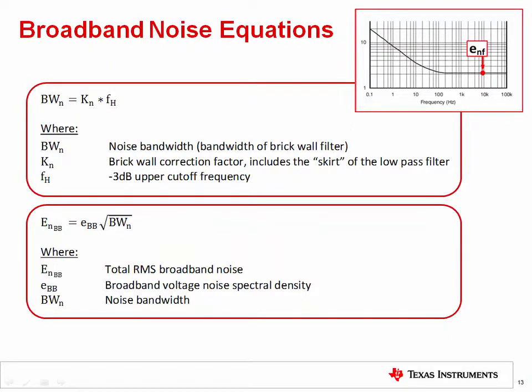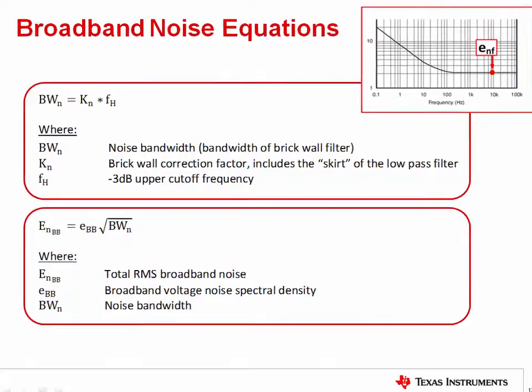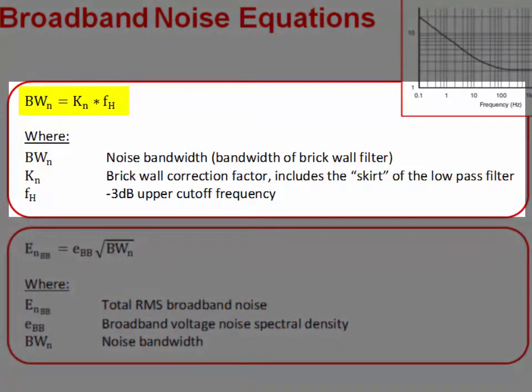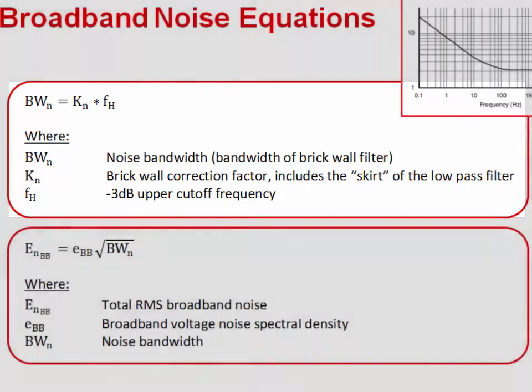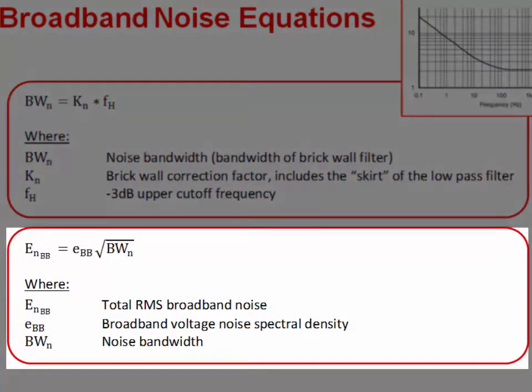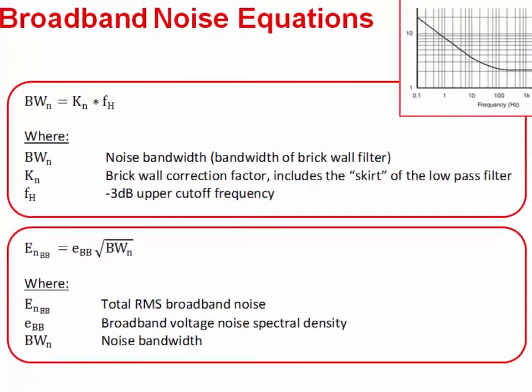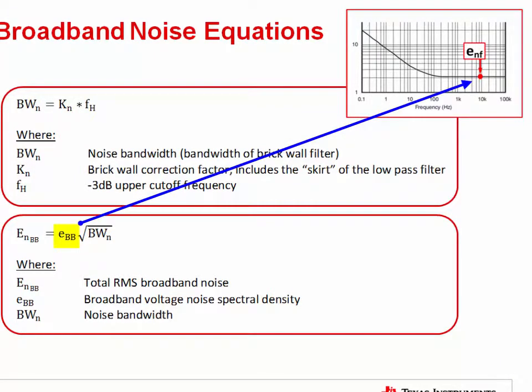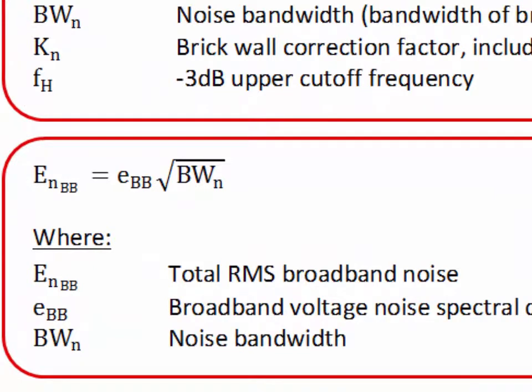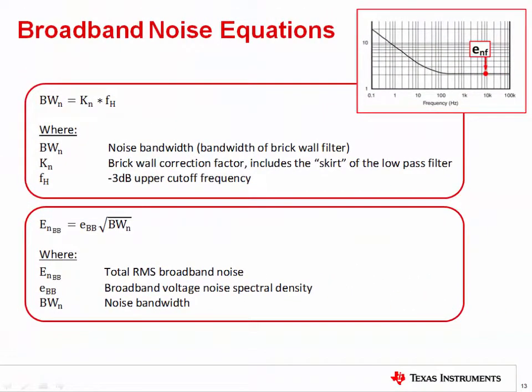Now that we have the noise bandwidth relationship, we can use it to convert the op amp noise spectral density curve to RMS noise. The first equation given in this slide is the noise bandwidth equation that we have already discussed. Simply use the table on the previous slide to select the appropriate value for k sub n and convert your signal bandwidth to noise bandwidth. The second equation on this slide shows how to convert spectral density to RMS noise. The RMS noise, E sub n BB, is calculated by multiplying the broadband noise spectral density by the square root of the noise bandwidth. The value for the broadband spectral density can be read from the spectral density curve given in the op amps data sheet. The relationship for converting noise spectral density to RMS noise is of key importance and should be memorized. It helps to remember the units when memorizing the formula. Spectral density in nanovolts per square root hertz is multiplied by the square root of noise bandwidth. The square root hertz from both factors cancels out so that RMS voltage has units of volts.